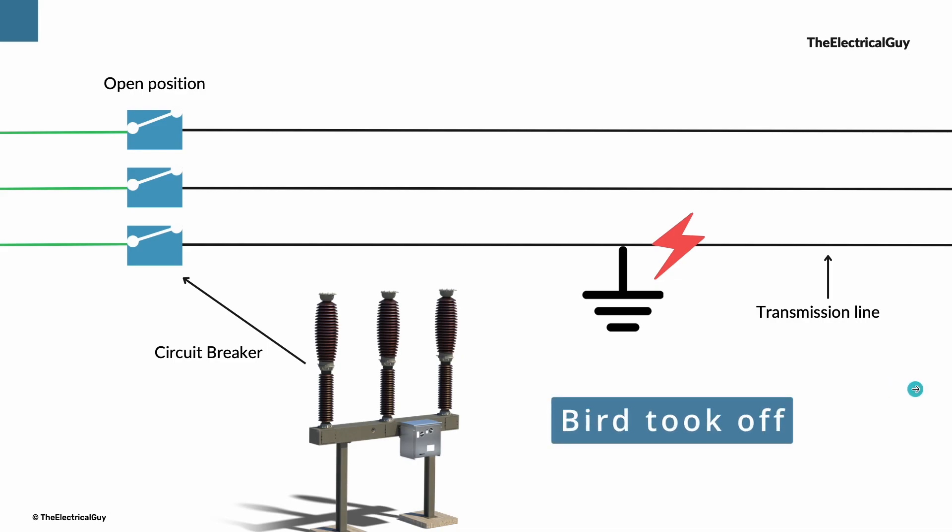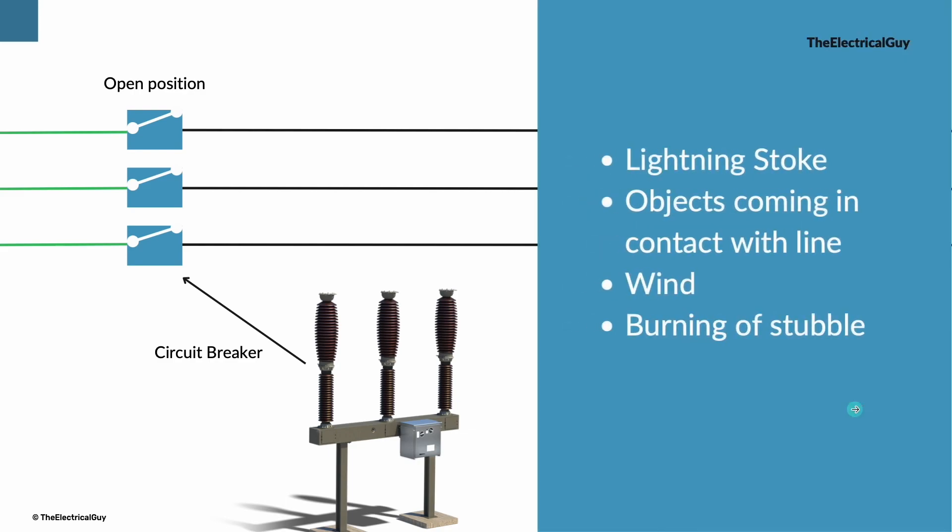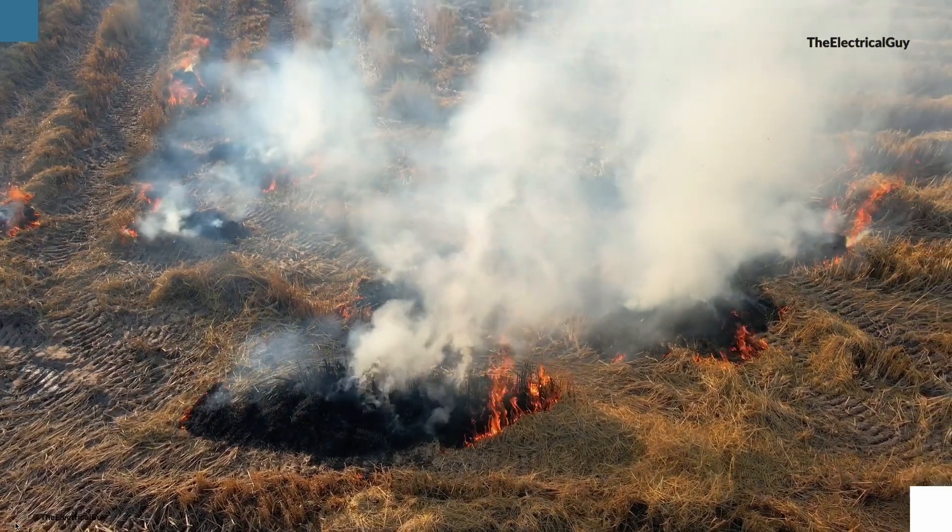Once the bird took off, the fault will clear quickly, but unless the operator operates the breaker, the supply will not be restored. Now I gave you example of bird crashing, but there can be other causes of fault like lightning strike or some objects coming in contact with the line, wind causing jumper loops to flash over to the tower legs, or maybe farmers burning stubble in their field.